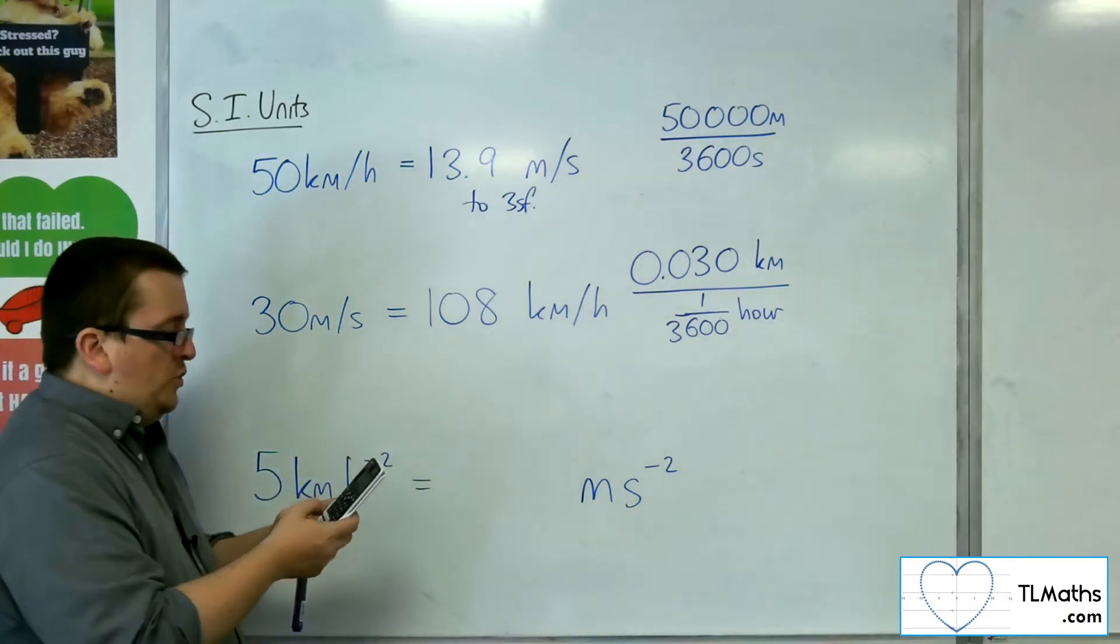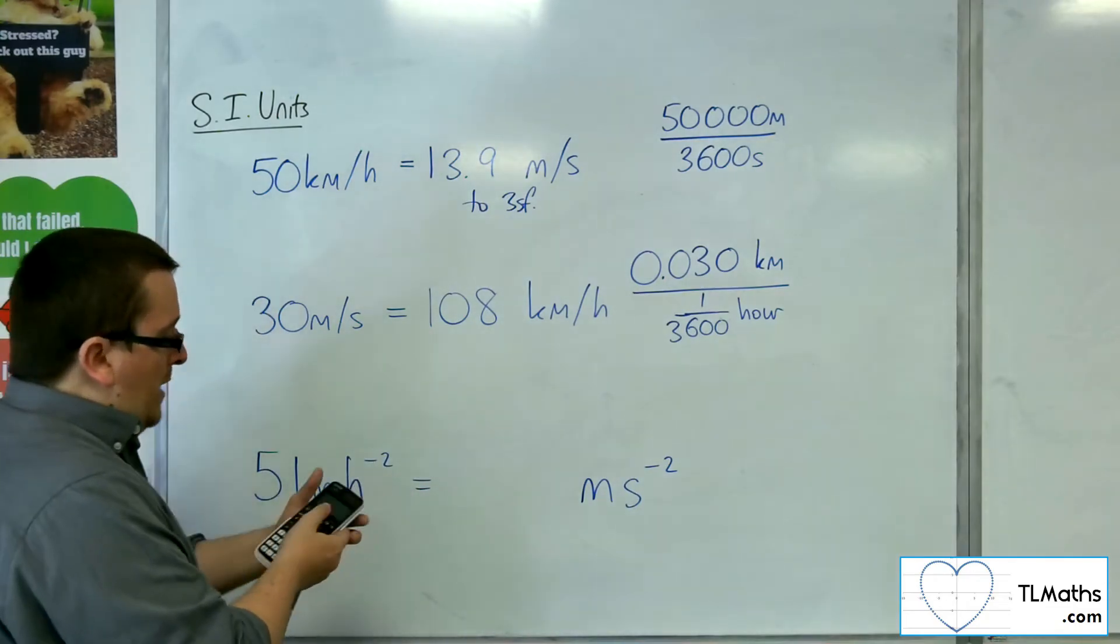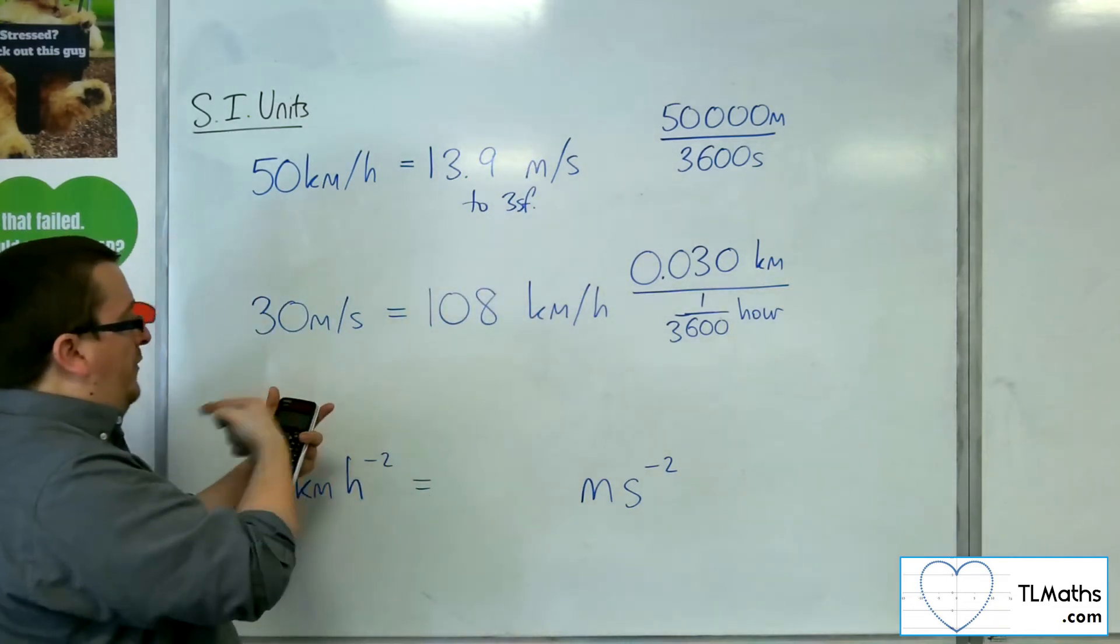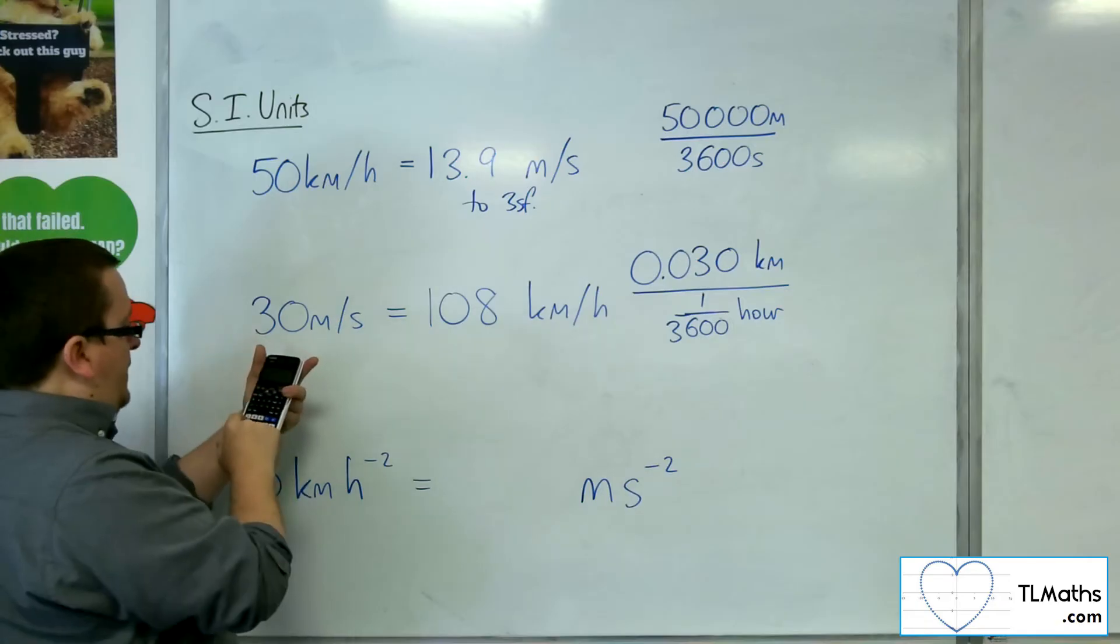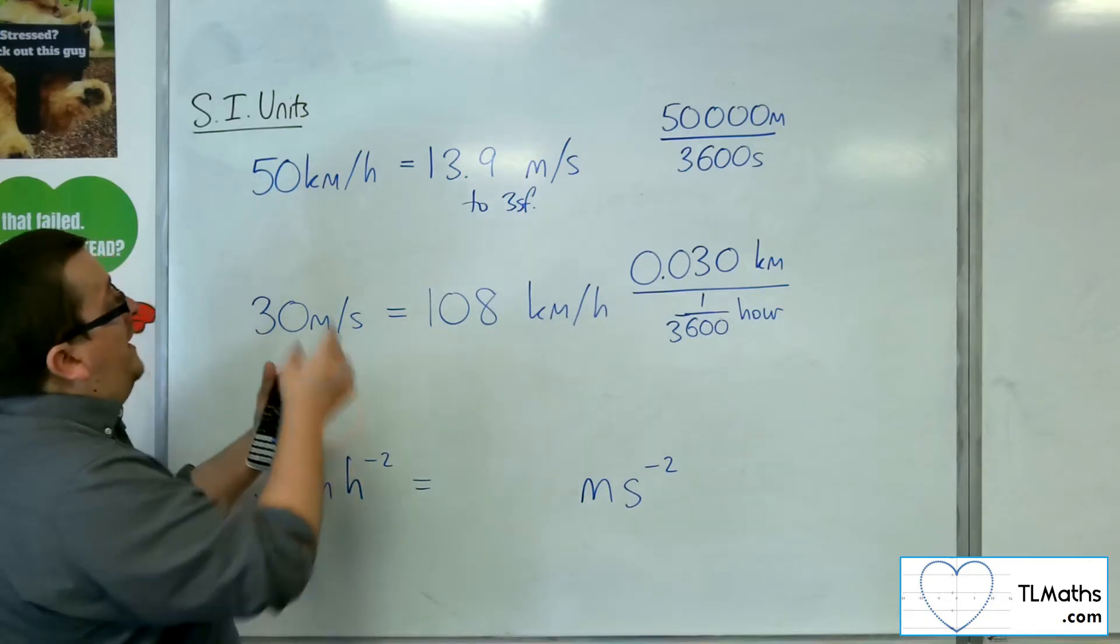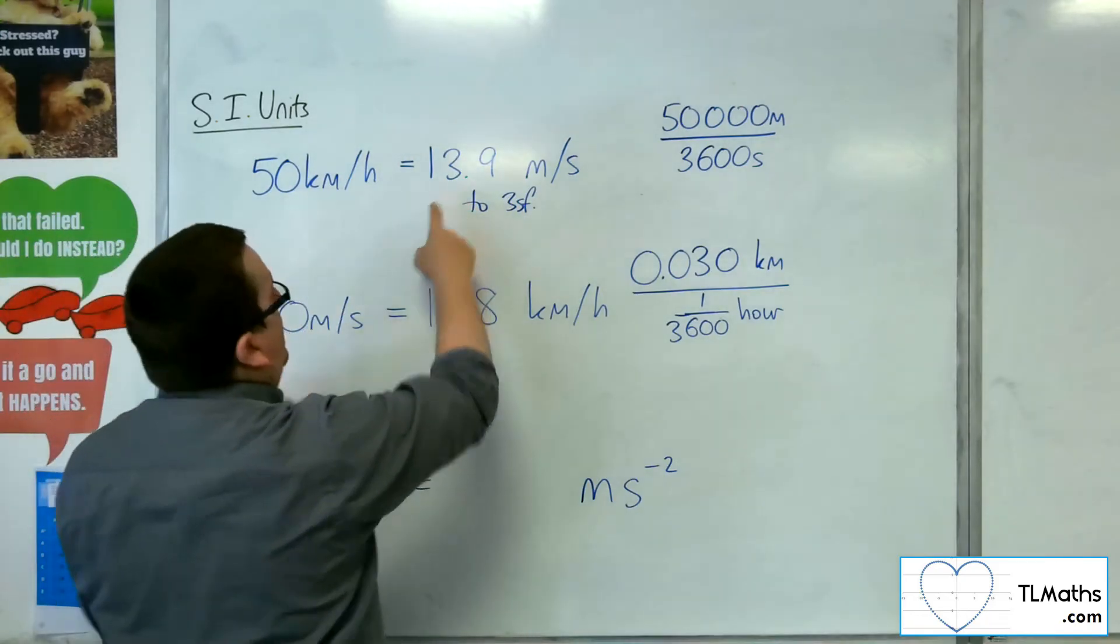So if I choose option number 1, you'll get this kilometres per hour, arrow, metres per second. You need just to scroll to the left to put in the 50 before the kilometres per hour, press equals, and you'll get the 125 over 9 directly.